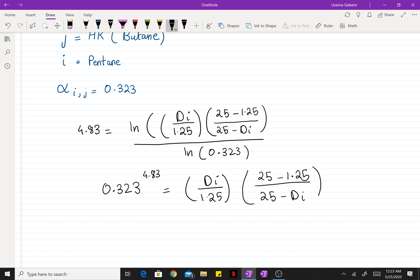So the left hand side equals - let me grab my calculator and just crank it out real quick. 4.83 times the natural log of 0.323 comes out to be a very small number, 4.26 times 10 to the negative 3. So 0.323 equals DI divided by 1.25 times 23.75 divided by 25 minus DI.